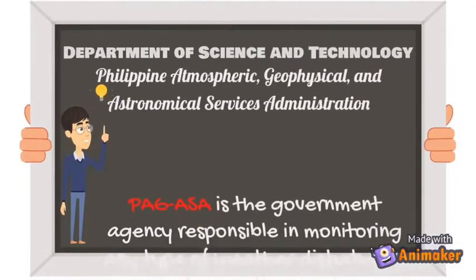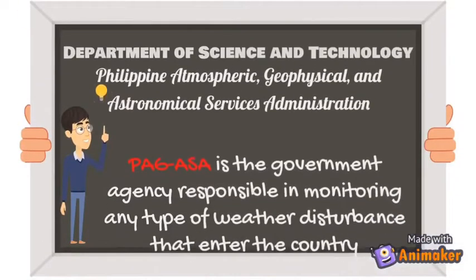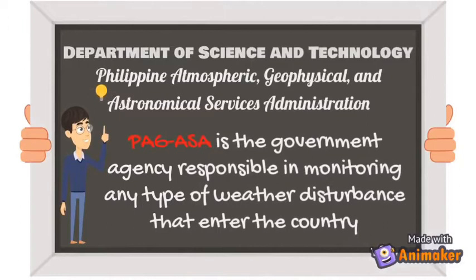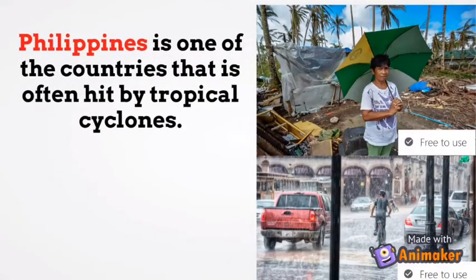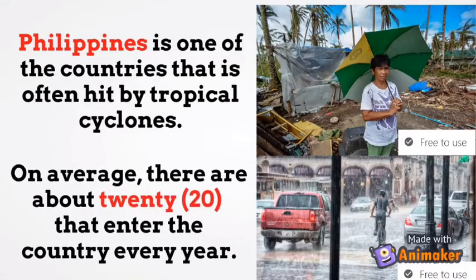Pag-Asa is a government agency responsible for monitoring any type of weather disturbance that enters the country. The Philippines is one of the countries most often hit by tropical cyclones. On average, there are about 20 that enter the country every year.